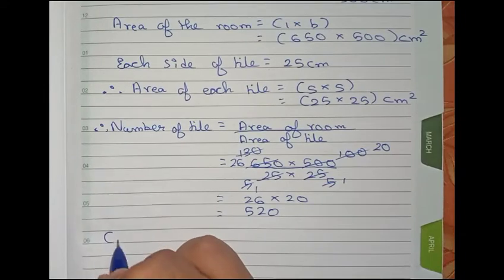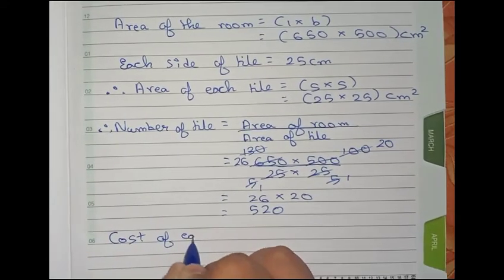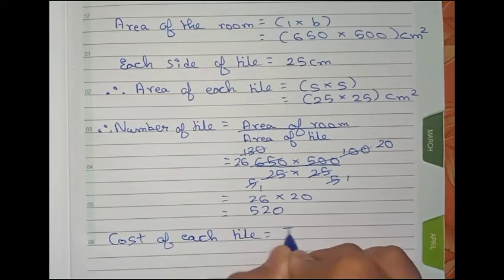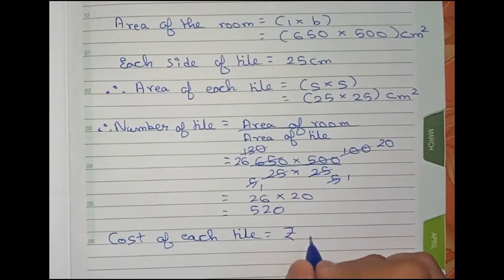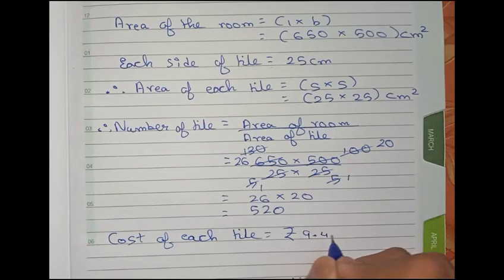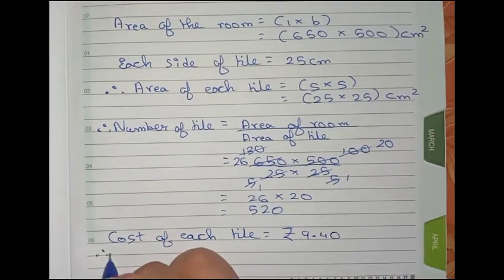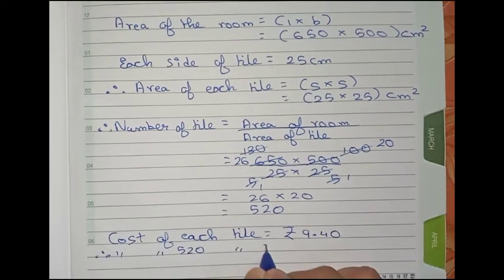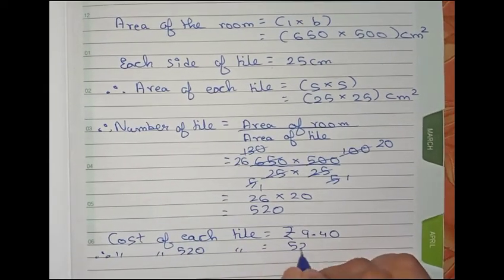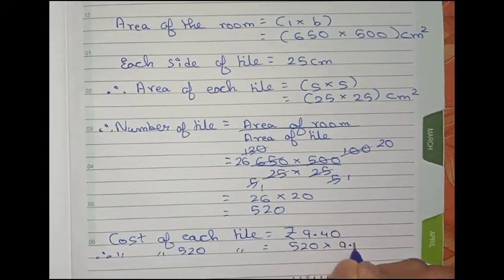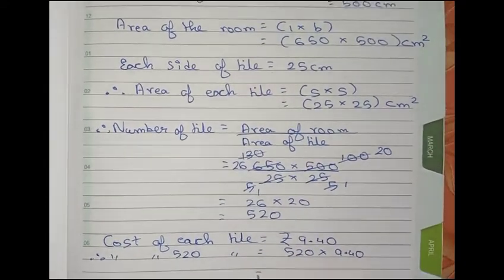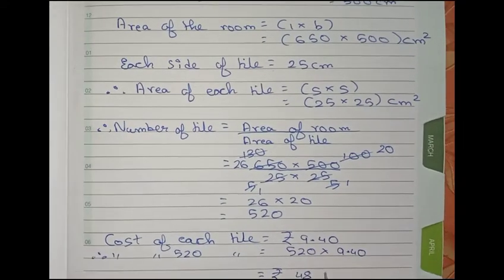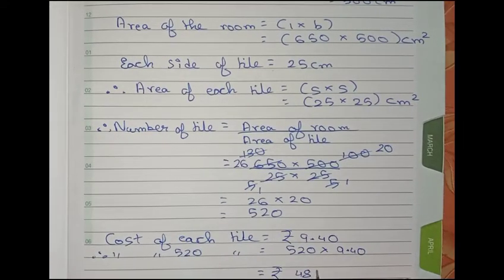Now write: cost of each tile equals rupees 9.40. Therefore, the cost of 520 tiles will be 520 into 9.40. That is equal to rupees 4,888.